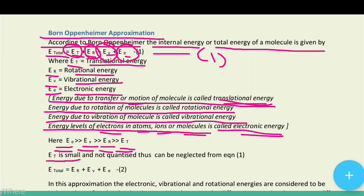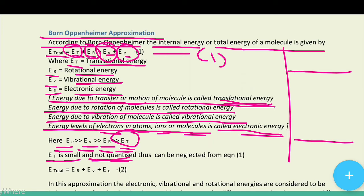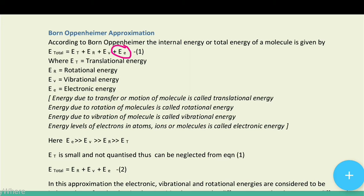Translational energy (ET) is very small and is not quantized — meaning it is continuous and can take any value, unlike quantized energy levels. Because ET is so small and not quantized, we neglect it from equation number 1. Therefore, E_total = E_rotational + E_vibrational + E_electronic (equation number 2).